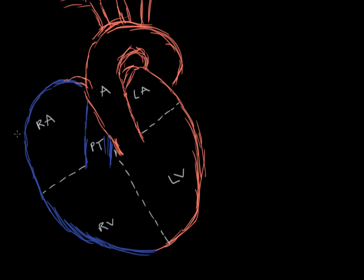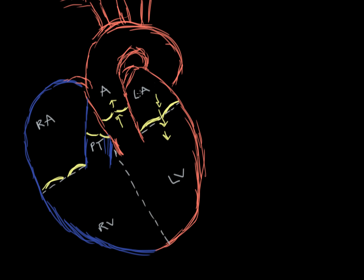Now let's look at the four valves in the heart. We're really only going to be concerned with the left side for the cardiac cycle. On the left side, between the atrium and the ventricle, we have our left atrioventricular valve, also known as the mitral valve — it allows flow from the atrium to the ventricle. In the aorta we have our aortic valve, allowing blood to flow upward. In the pulmonary trunk we have the pulmonary valve, and on the right side of the heart we have the right atrioventricular valve.